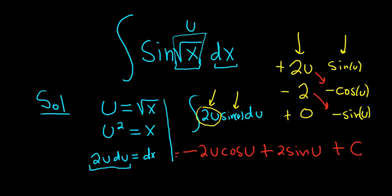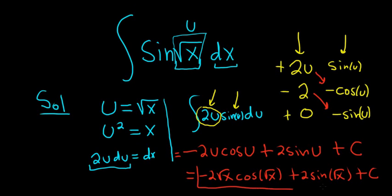The very last thing to do is replace the u with the square root of x. So this is negative 2 square root of x, cosine square root of x, I'll put it in parentheses this time, plus 2 sine square root of x, and plus c. And that is the final answer.